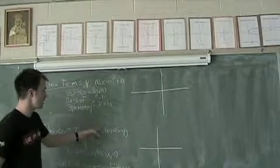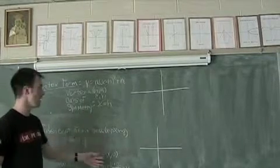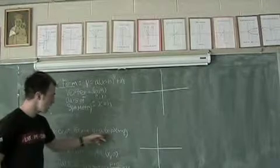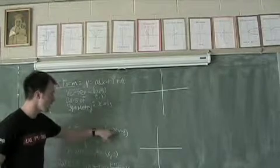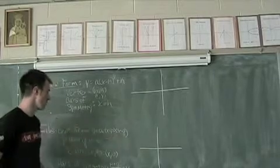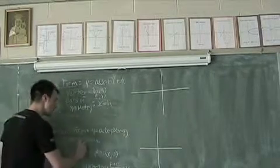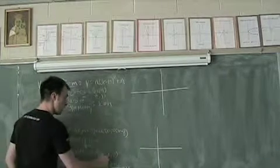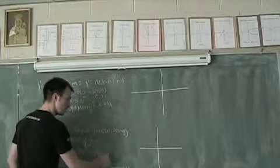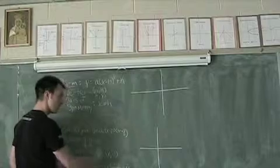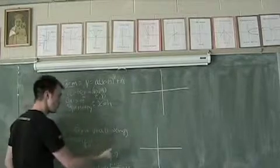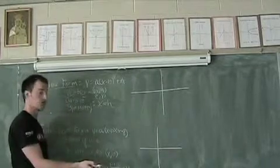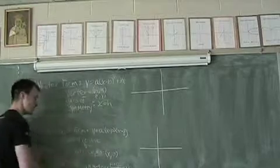It follows the form Y equals A times quantity X minus P, close quantity, times quantity X minus Q, close quantity. This is where P and Q are X-intercepts. So they have the location P, zero and Q, zero. That gives us X-intercepts.